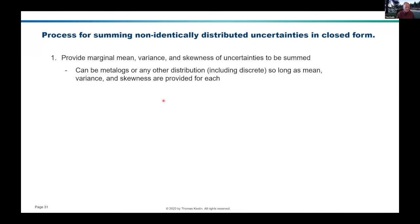The process is pretty straightforward, but just to make sure everyone understands: the first step is to provide the marginal mean, variance, and skewness of the uncertainties to be summed. These can be metalogs, as I showed, but they can also be from any other distribution — a lognormal distribution or even a discrete distribution — so long as the mean, variance, and skewness are provided for each.